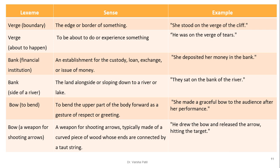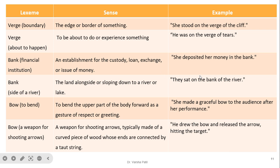For example, 'verge' has two senses: the edge or border of something — 'she stood on the verge of the cliff' — and about to happen, meaning to be on the point of doing or experiencing something — 'he was on the verge of tears.' For 'bank,' one sense is a financial institution and another is the land alongside a river or lake.